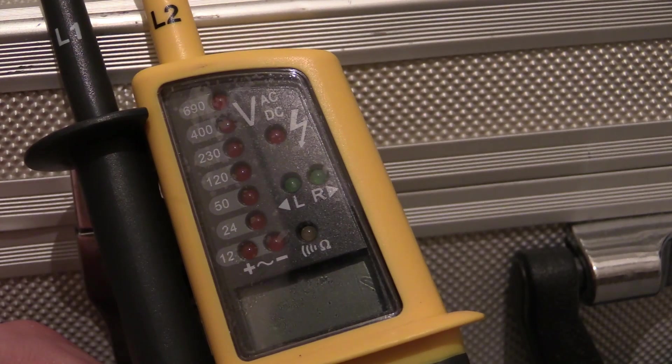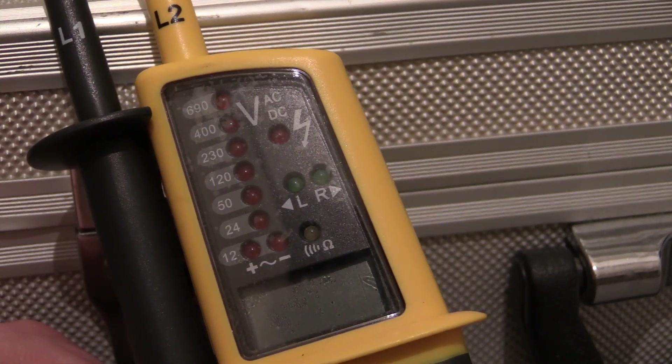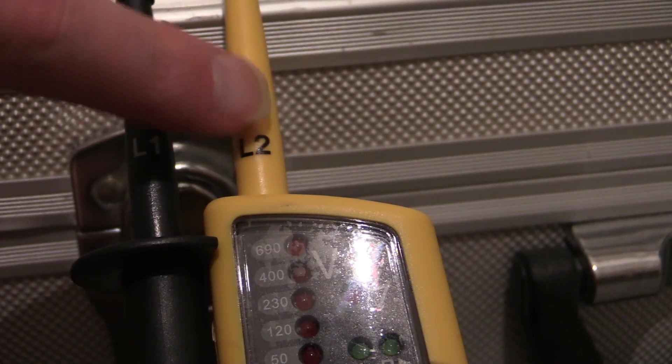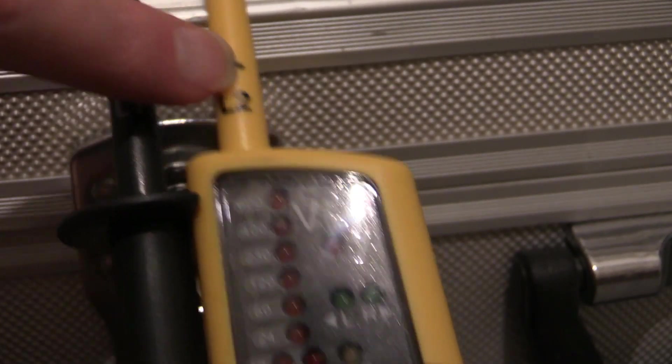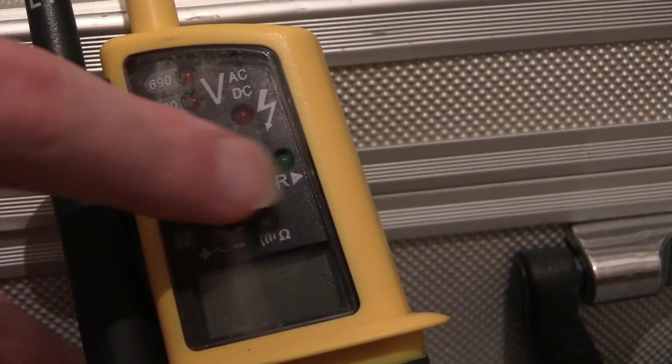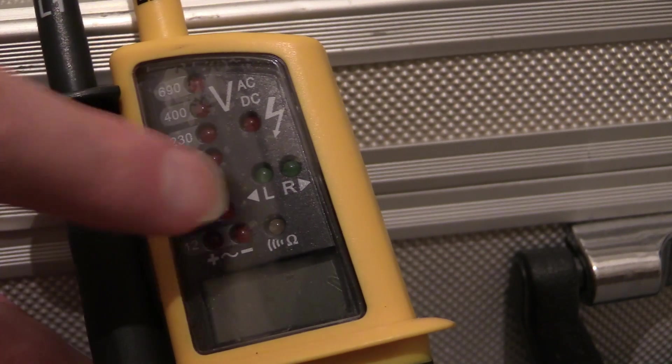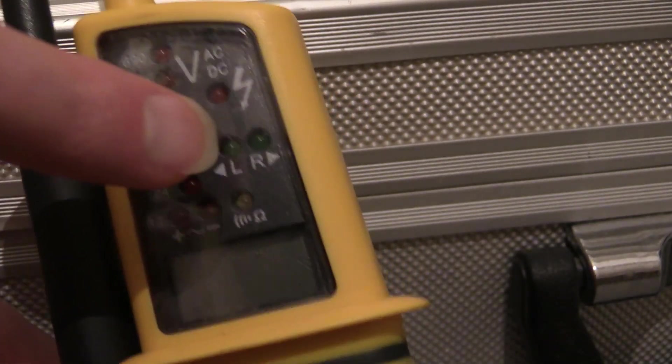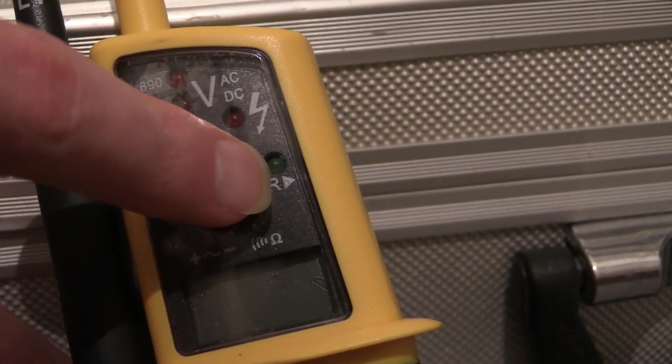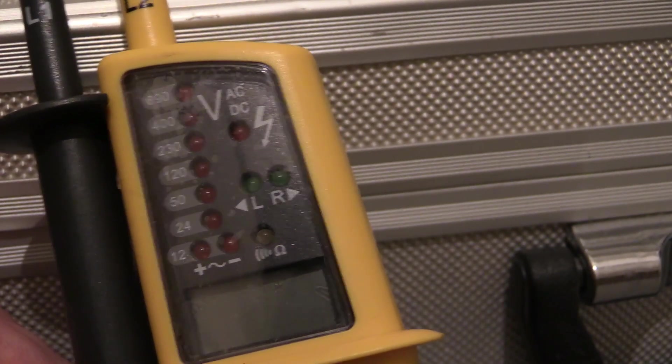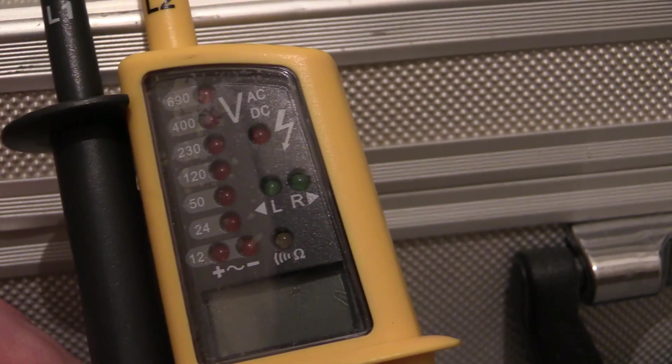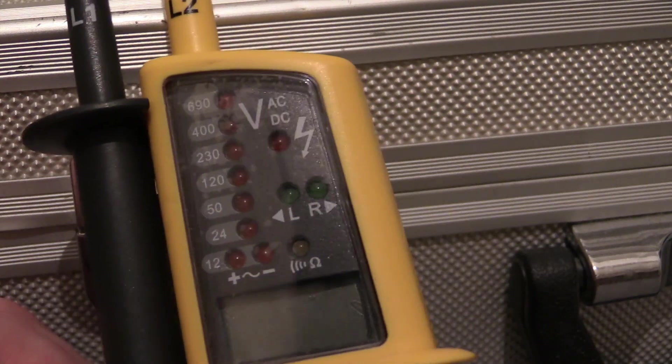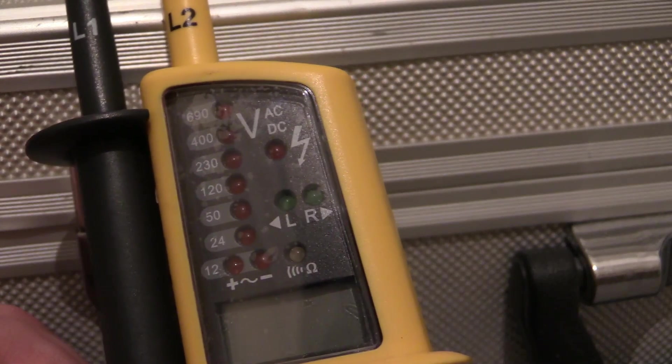Another thing this one can do, it can do phase rotation apparently. And, on these test probes you've got L1 and L2. Okay. So, you would put these onto, put one on one phase, one on another. And, those green lights would light up. Okay. If you've got it in a certain way round, this one would light up. And then you would move these probes around in sequence on the phases. Again, that would light up. And you'd move it around again. That would light up. So then you would know that the three phases are in the correct, you know, layout inside a control panel or inside a distribution box or whatever. Okay. So, yes, you can do phase rotation as well. Two probe phase rotation.